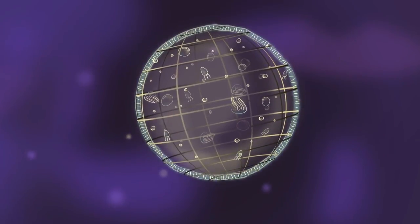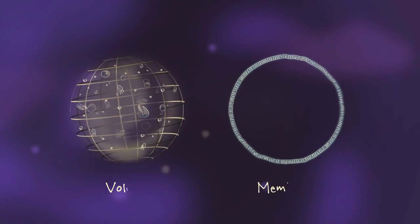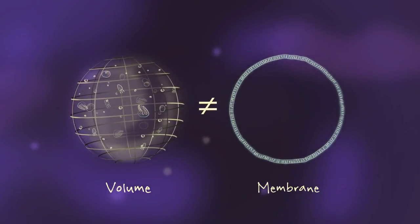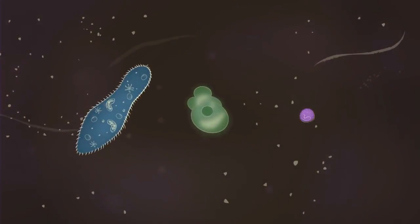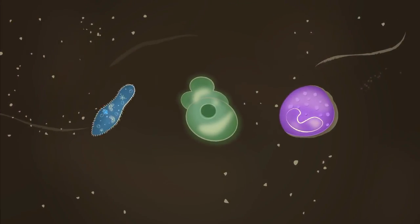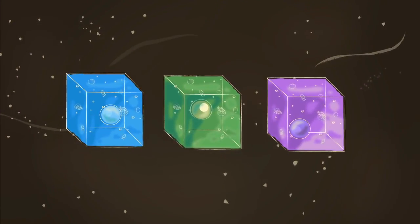But there's a biological quirk in this setup. A cell's surface and volume increase at different rates. Cells come in many shapes, but imagining them as cubes will make the math easy to calculate.